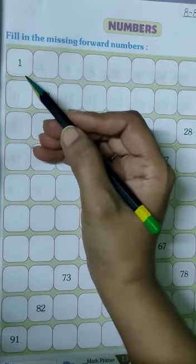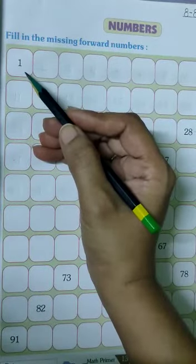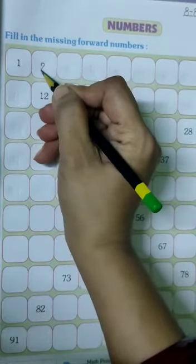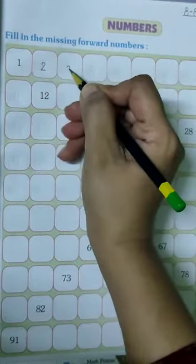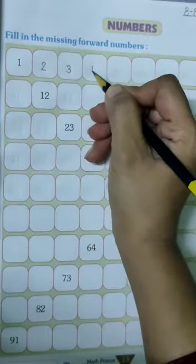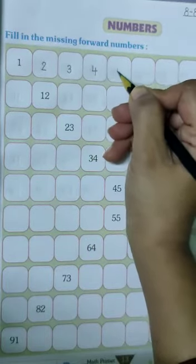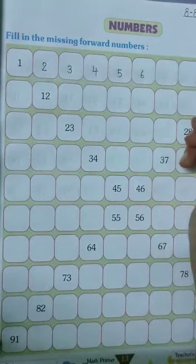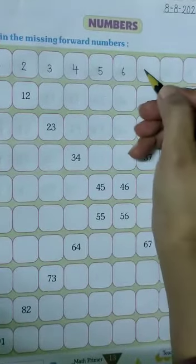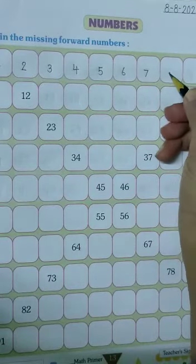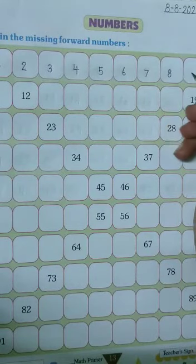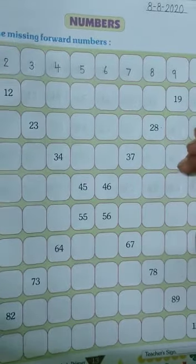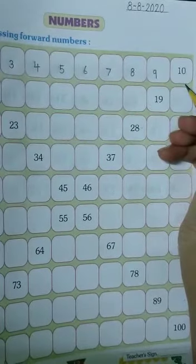1 is already written here. So after 1, write 2, then write 3, 4, 5, 6. After 6, write 7, then 8, 9, and 10 is also written here. So after 10,